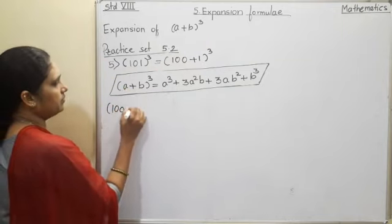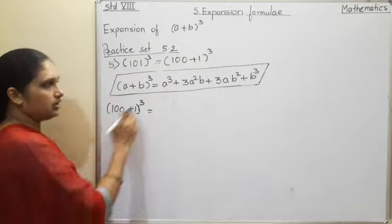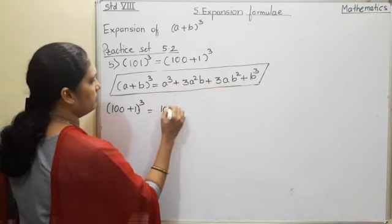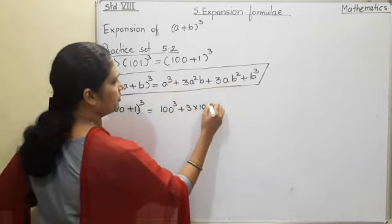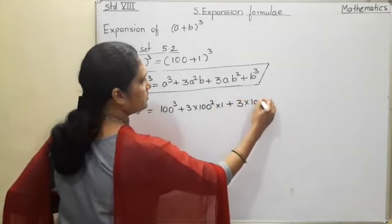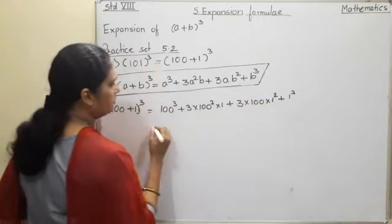I will write it here. (100+1)³ is equal to, now a means 100, b means 1. So accordingly we will write 100³ plus 3 into first number square into second number plus 3 into first number into second number square plus second number cube.